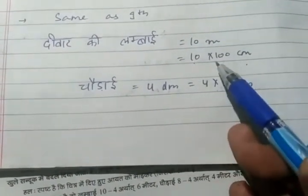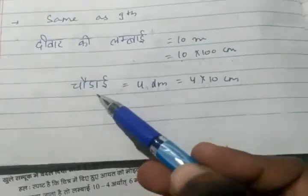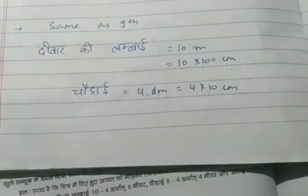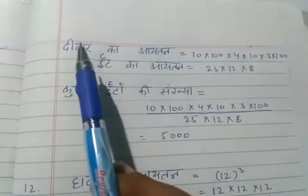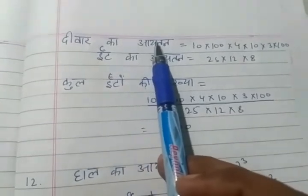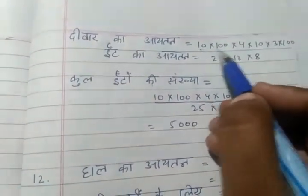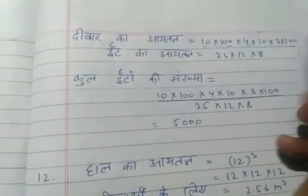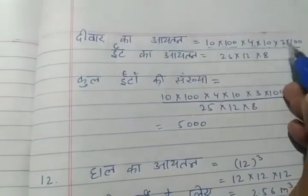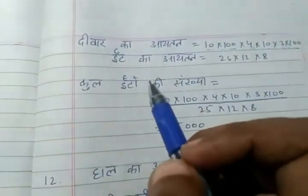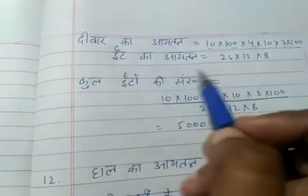The next question is question number 11. You have to find the volume. The edge is given as 4. Now the volume is length × breadth × height. This is edge × edge × edge, which gives us the volume.